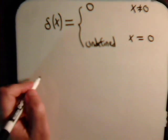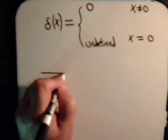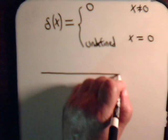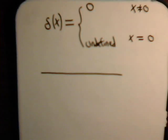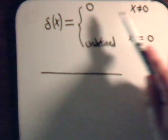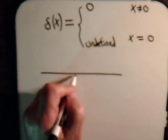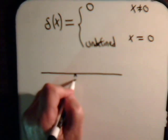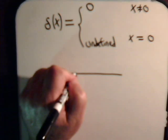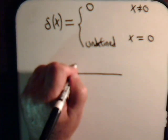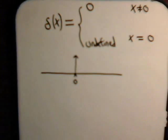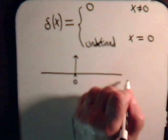Let's say that here is the x-axis. This is always zero, except when x is zero. Let's say this is zero. Then it's undefined, so you just have like a vertical line that goes all the way up to infinity.